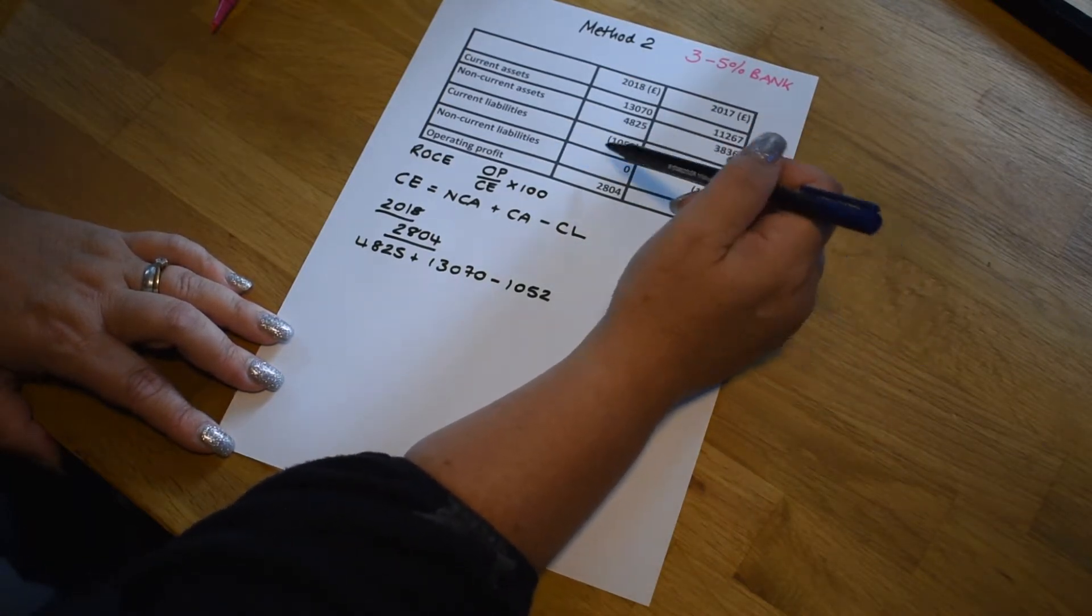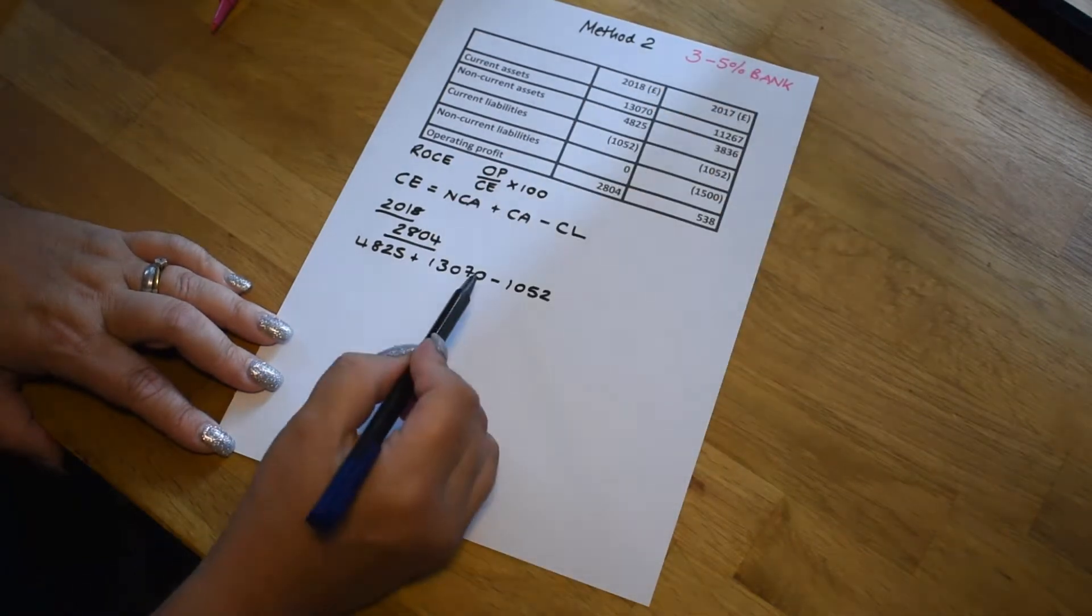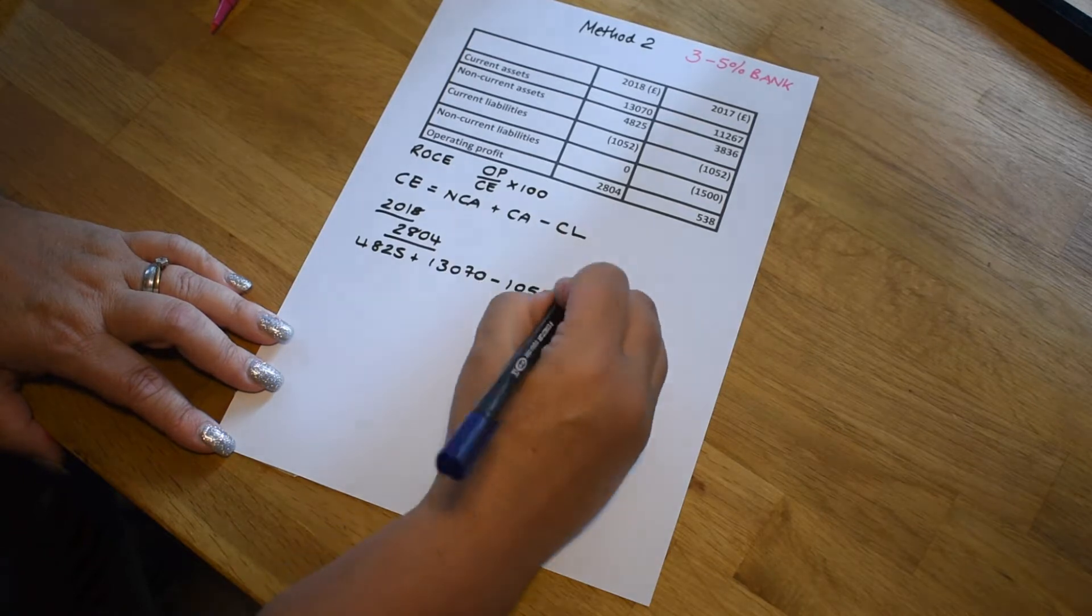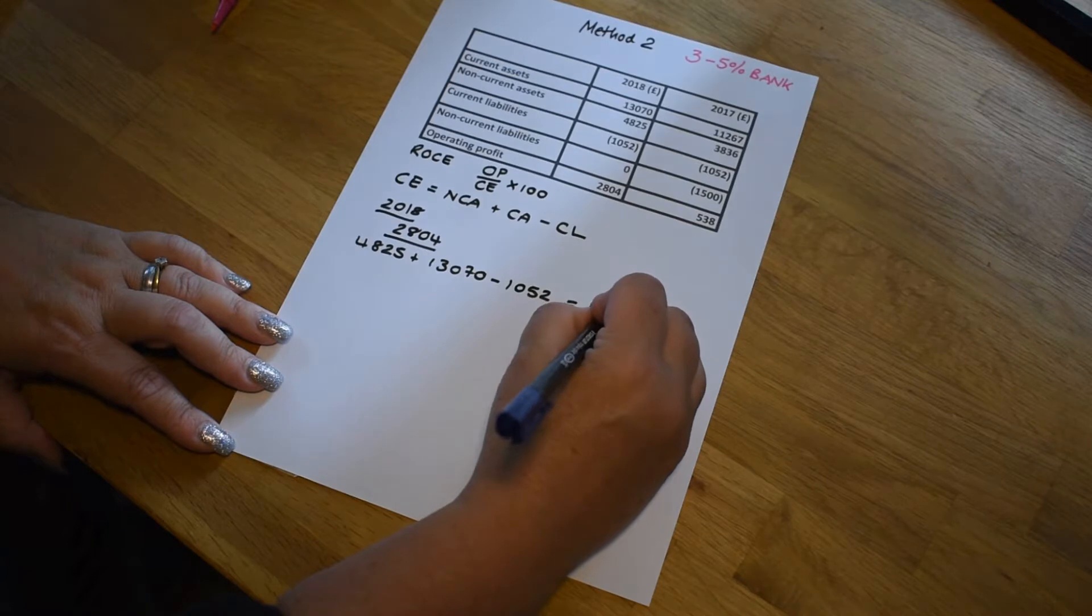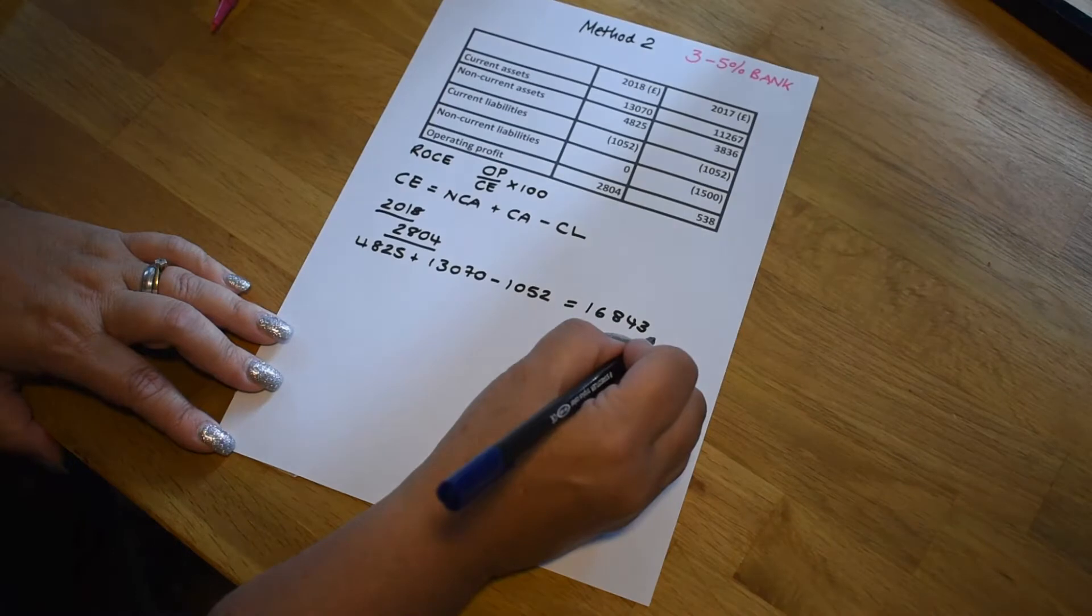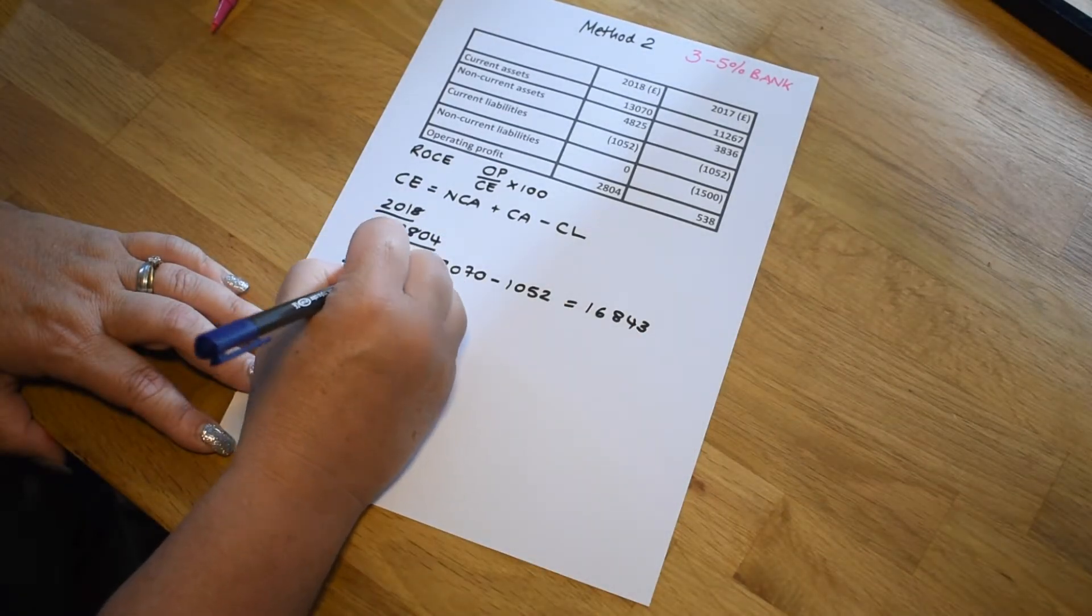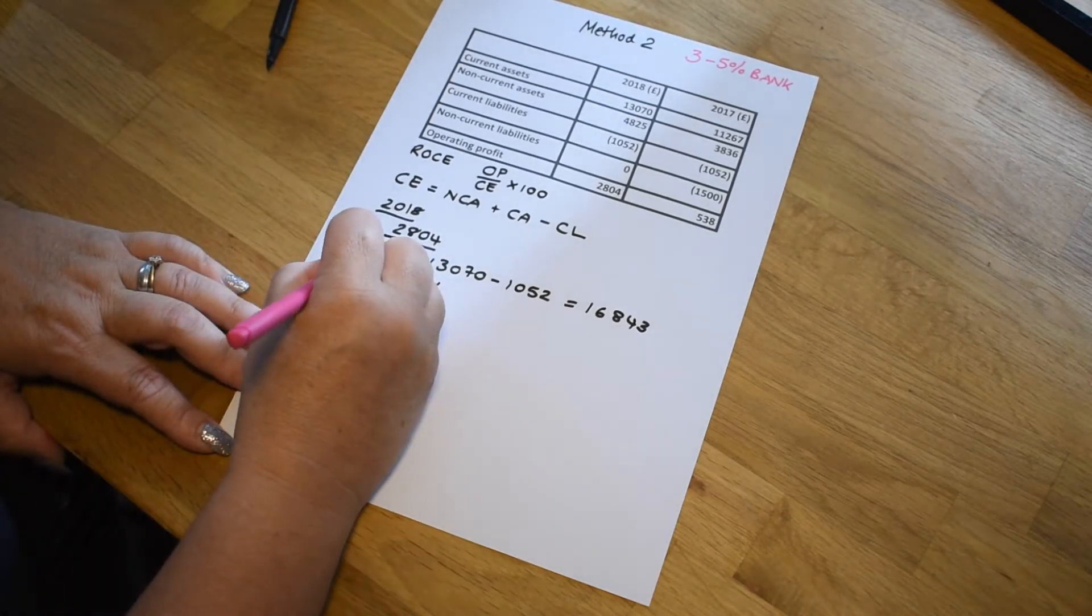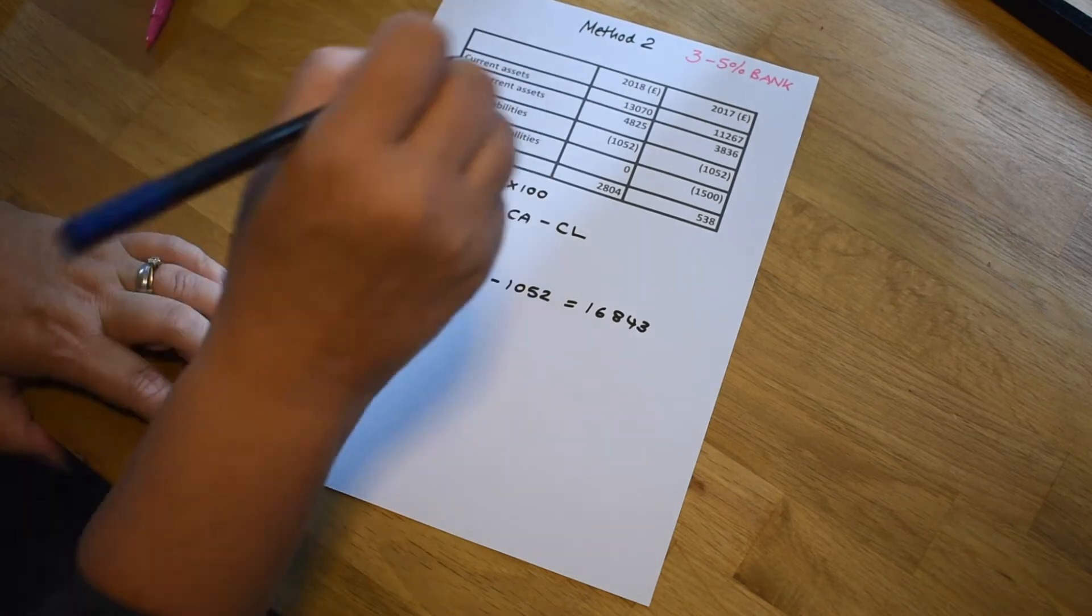This is just to indicate that it's money that the business owes out. It's not money that they have, it's money that they owe out. And so they put it in brackets. Don't try and do anything with negative numbers, otherwise you end up with two negatives making a positive here and you'll get the wrong result. So this formula adds up to 16,843. So we put one over the other and multiplied by 100 to give us a result of 16.65%. Now that's rounded up to two decimal places.